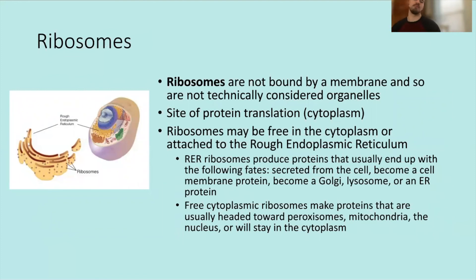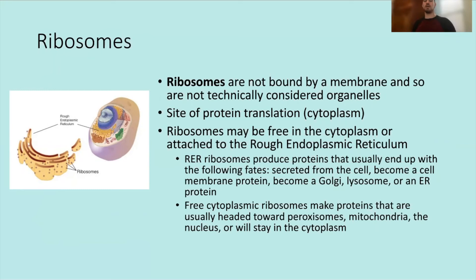Ribosomes are not bound by membranes, so technically they're not considered organelles, but they are super important structures for all cells. They are the site of protein translation in the cytoplasm. Ribosomes may be free in the cytoplasm or attached to the rough endoplasmic reticulum. RER ribosomes produce proteins that are usually secreted from the cell, become cell membrane proteins, or become Golgi, lysosome, or ER proteins. Free cytoplasmic ribosomes make proteins headed toward peroxisomes, mitochondria, the nucleus, or that will stay in the cytoplasm.